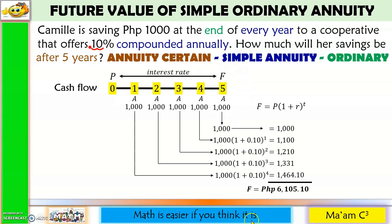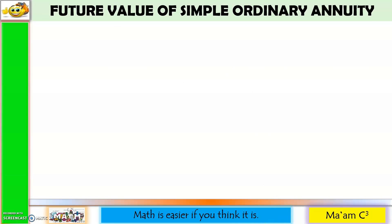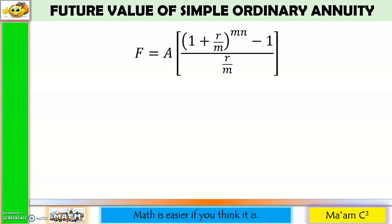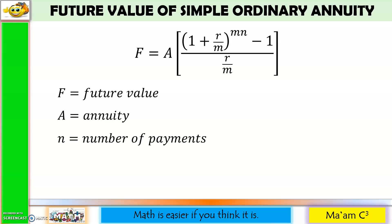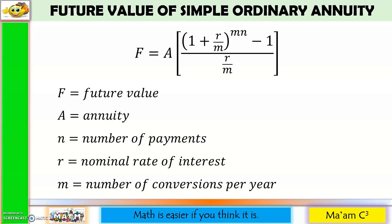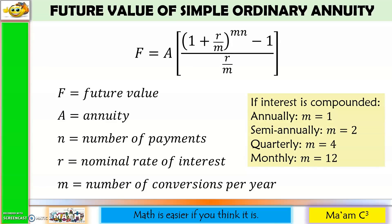There is another way of solving the future value of simple ordinary annuity, and that is using this formula: F is the future value, A is the annuity, N is the number of payments, R is the nominal rate of interest, and M is the number of conversions per year. The most common number of conversions: annually M = 1, semi-annually M = 2, quarterly M = 4, and monthly M = 12.